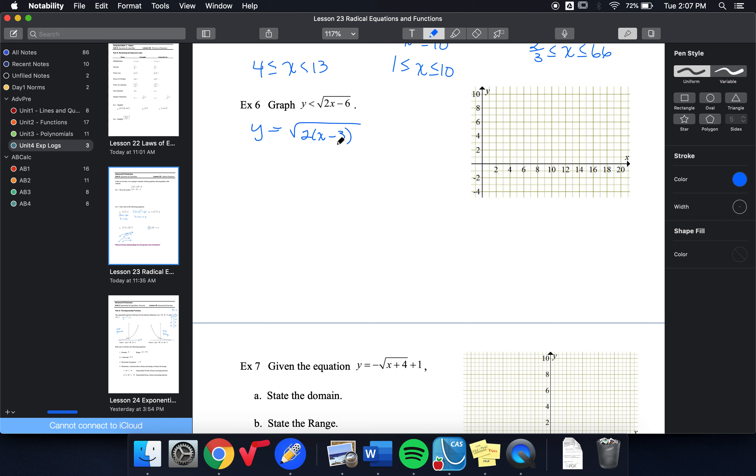So I'm going to take my parent function, and the point 0, 0 is going to become the point 3, 0. And instead of putting a solid circle there, I'm going to put an open circle, because this is a strict inequality. It says only less than, not equal to.